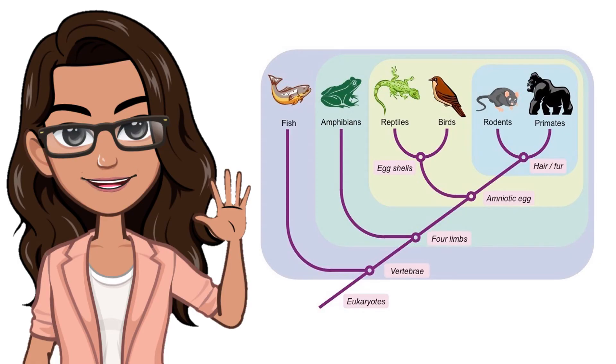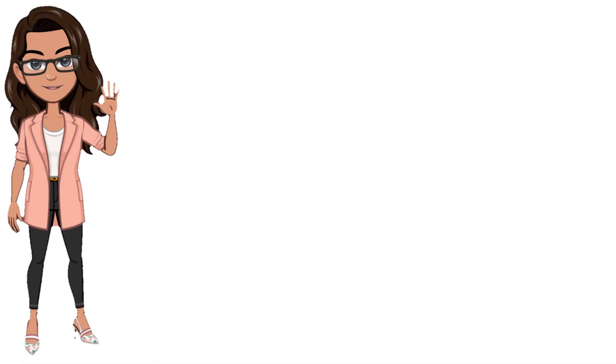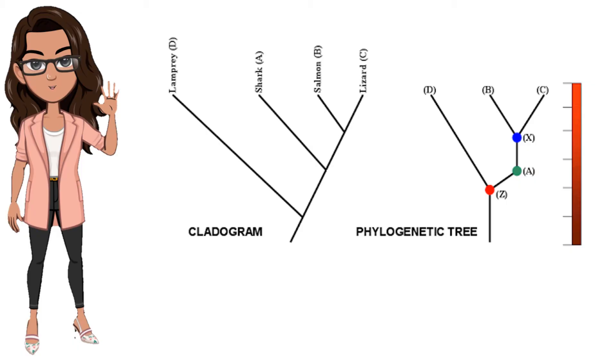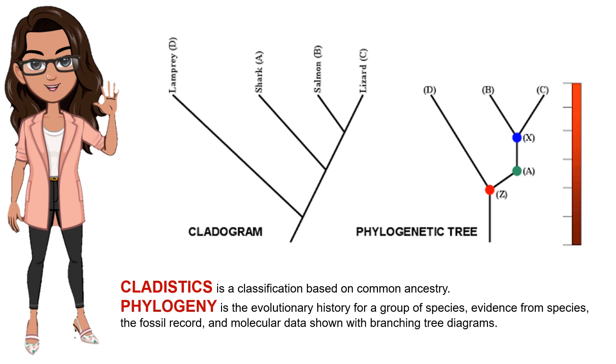How do scientists construct phylogenetic trees? After the analogous and homologous traits are sorted, scientists often organize homologous traits using a system called cladistics. Cladistics sorts organisms into clades, a group of organisms that descended from a single ancestor. Modern classification is based on evolutionary relationships called systematic or cladistics. Cladistics is a classification based on common ancestry. Phylogeny is the evolutionary history for a group of species, evidence from species, the fossil record, and molecular data shown with branching tree diagrams.